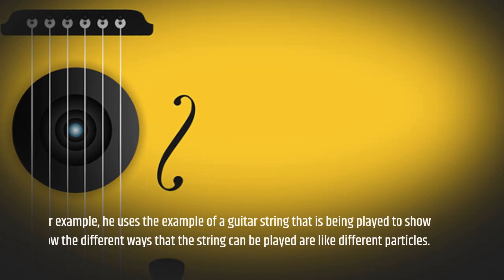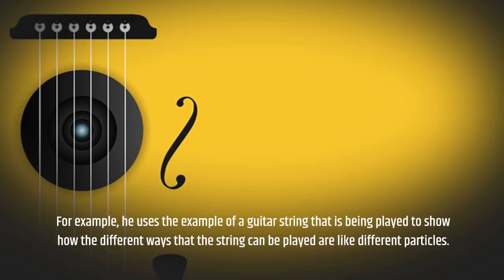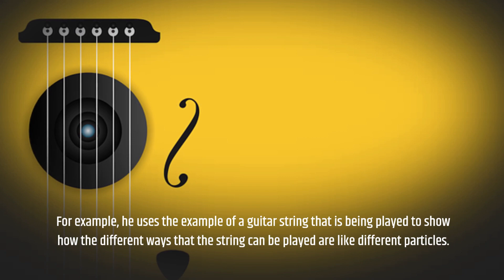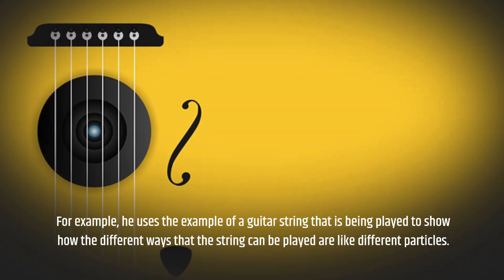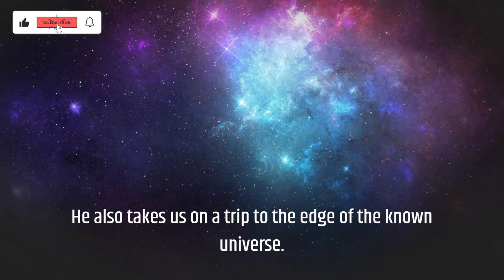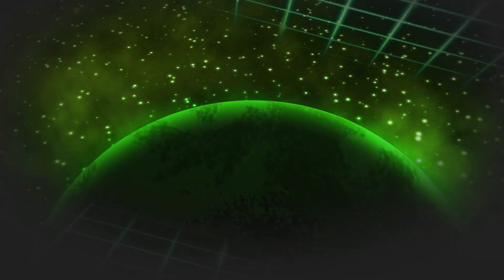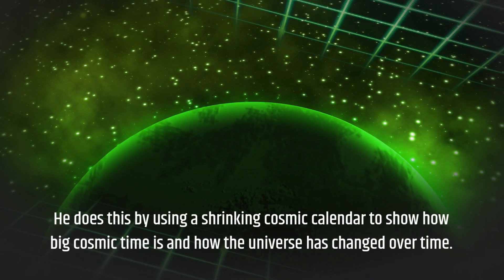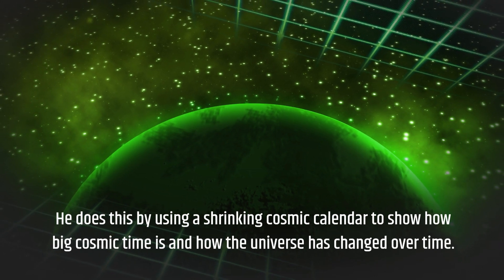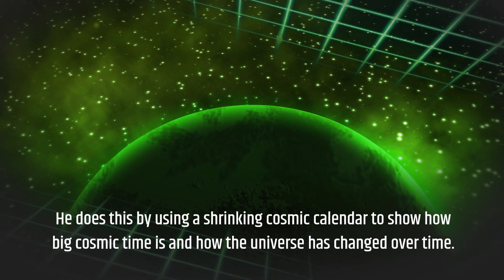For example, he uses the example of a guitar string that is being played to show how the different ways that the string can be played are like different particles. He also takes us on a trip to the edge of the known universe. He does this by using a shrinking cosmic calendar to show how big cosmic time is and how the universe has changed over time.